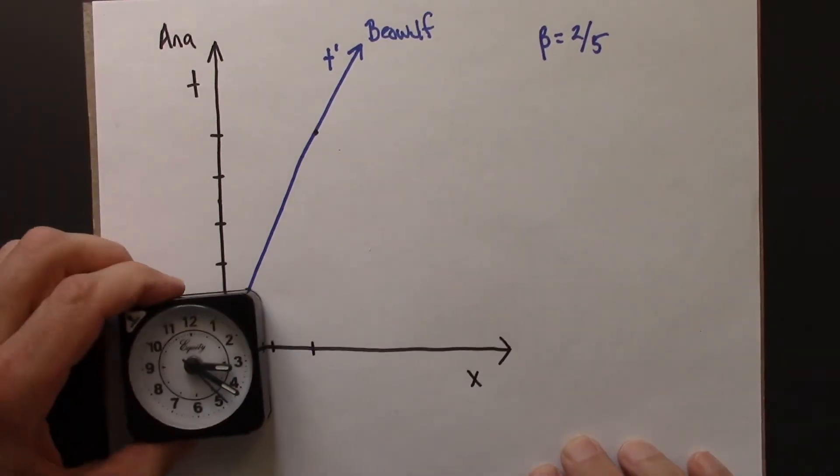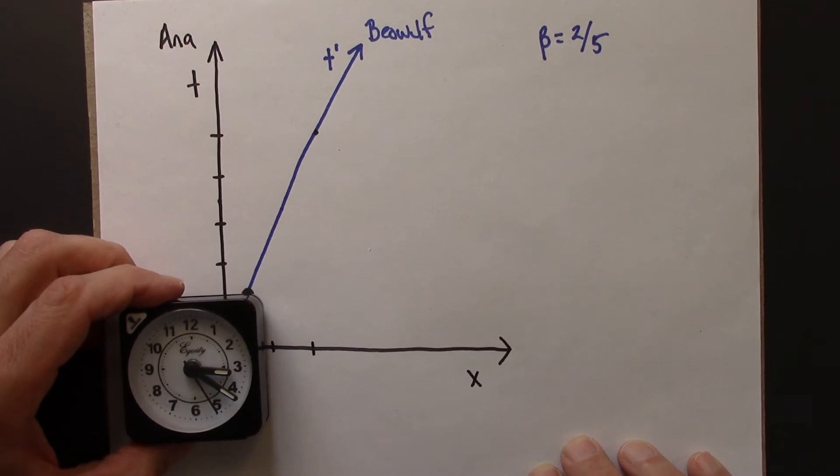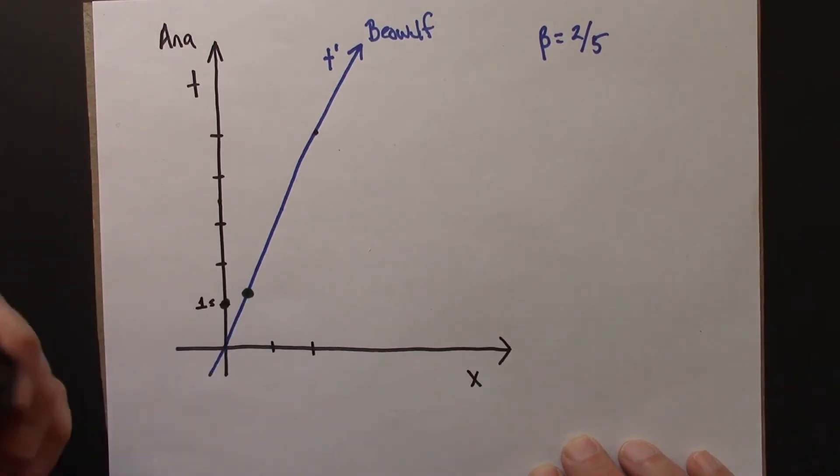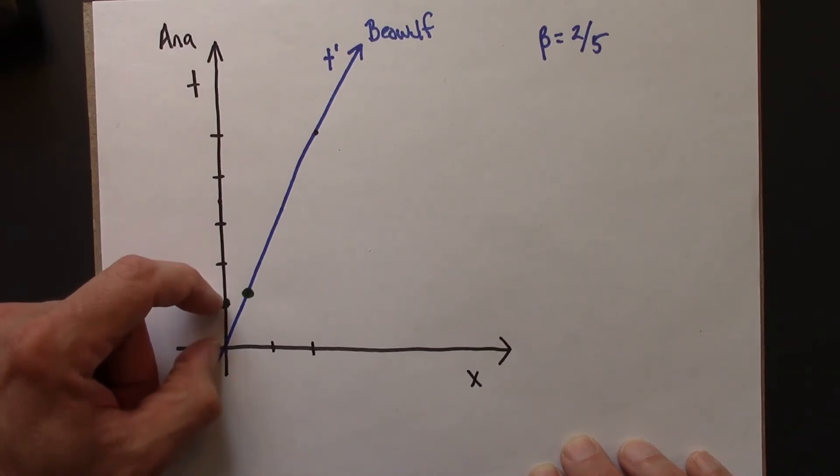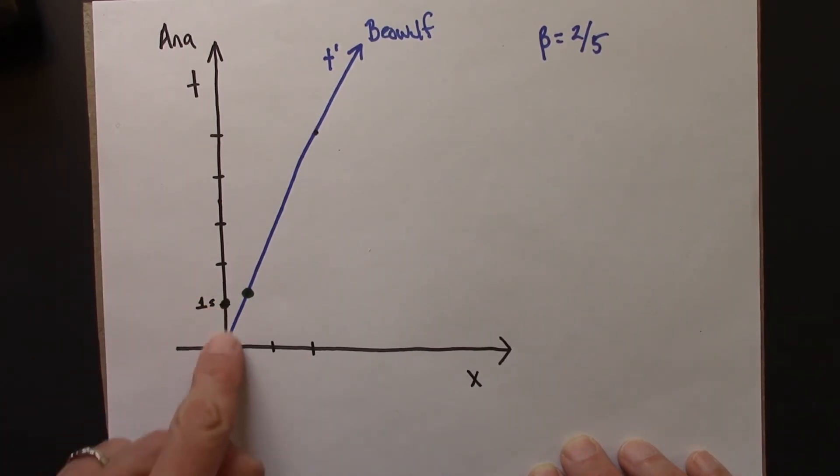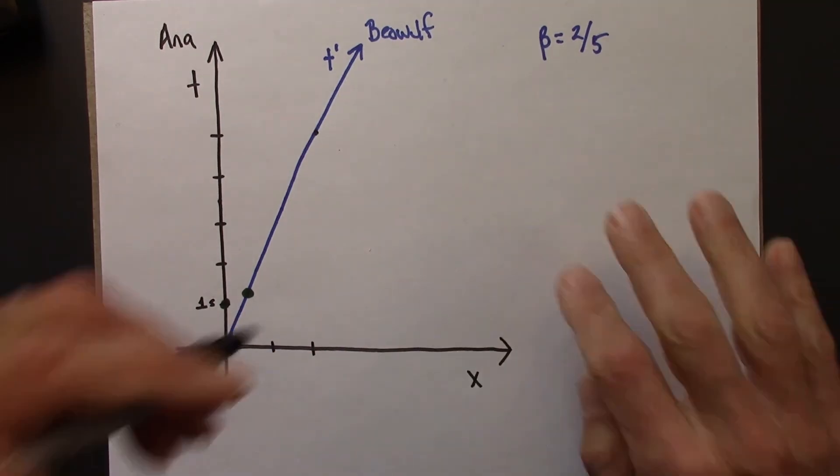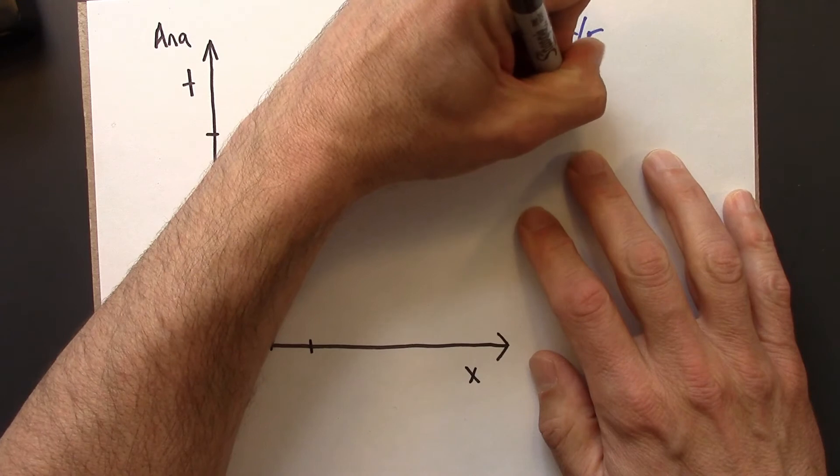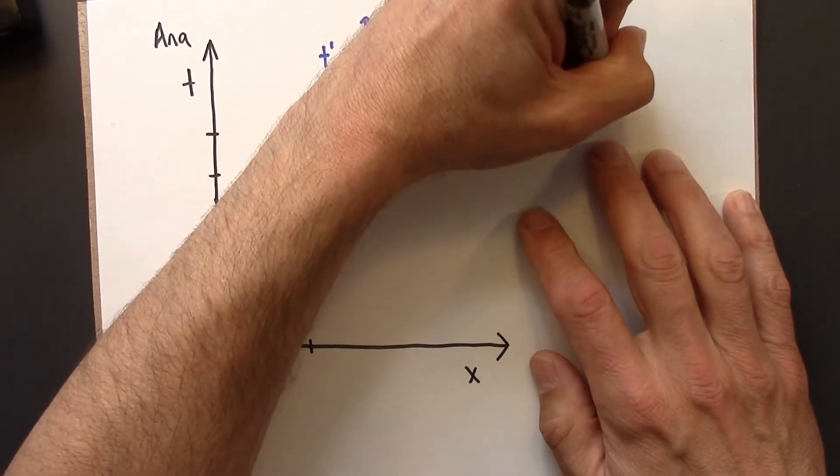0, then it ticks to 1. That's a clock that's present at both events. So that's going to measure a space-time interval. Delta x is 0. Delta t is 1. And just as a reminder, the space-time interval, the metric equation tells us is this.